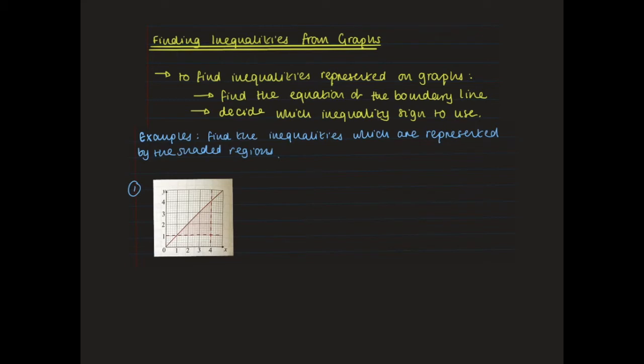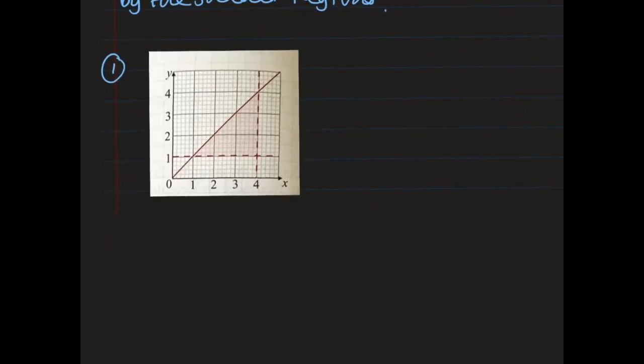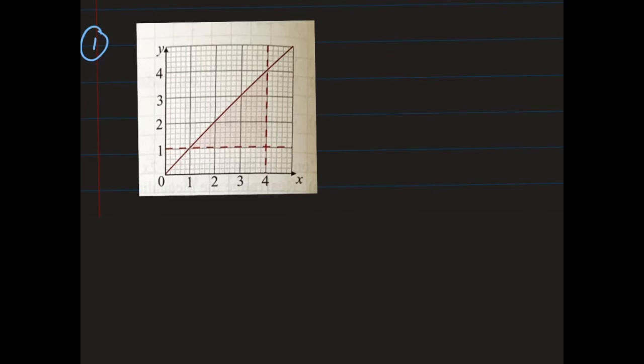In this example, I need to find the inequalities represented by the shaded region. Zooming in, we can see three lines. The first thing to do is determine the equation of each line. Looking at the vertical line first, everywhere along this line x is equal to 4, so the equation of the line is x equals 4.